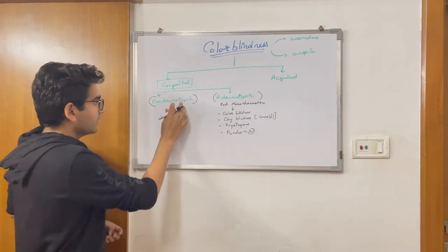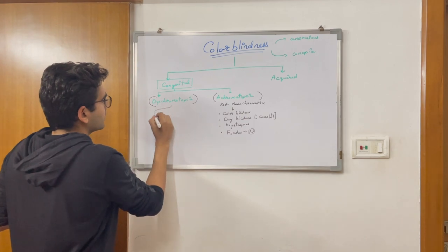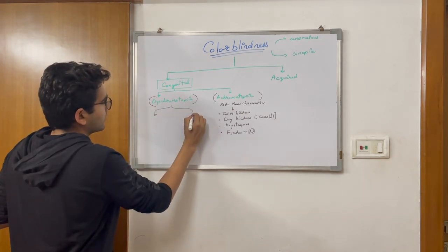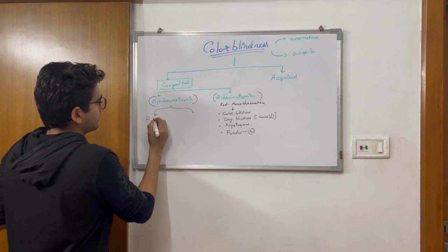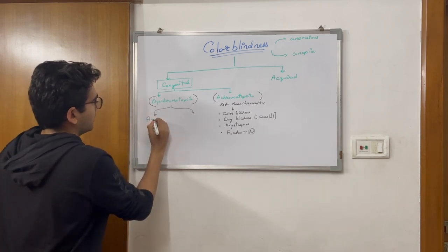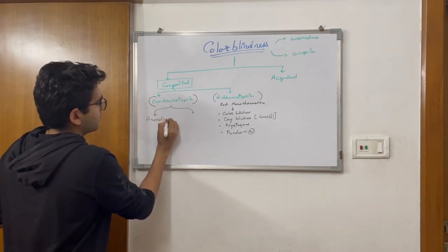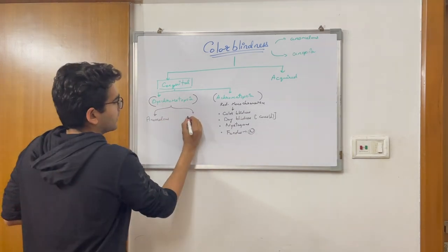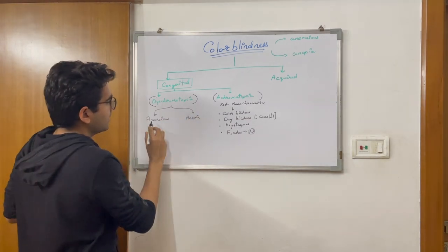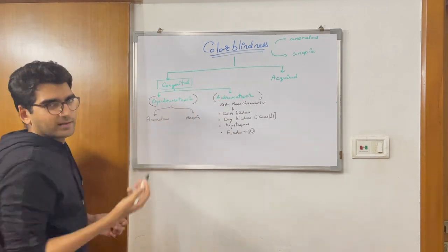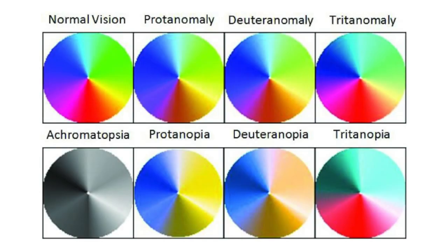Dischromatopsia can be further divided into anomaly — anomalous — and anopia, that is absence versus defect. Anomalous dischromatopsia can also be termed anomalous trichromacy, because here the mechanism to appreciate all three primary colors is present but is defective for one or two of them.